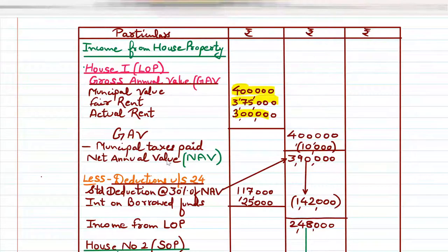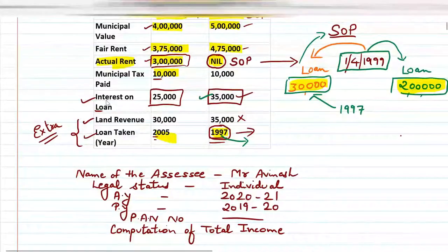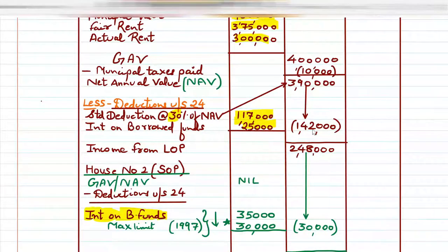Number one is standard deduction at the rate of 30% of NAV. The other is interest on borrowed funds. So 30% of ₹3,90,000 comes to ₹1,17,000. Interest on loan for house number one is ₹25,000. Total deductions: ₹1,17,000 plus ₹25,000 equals ₹1,42,000. So ₹3,90,000 minus ₹1,42,000 gives ₹2,48,000.